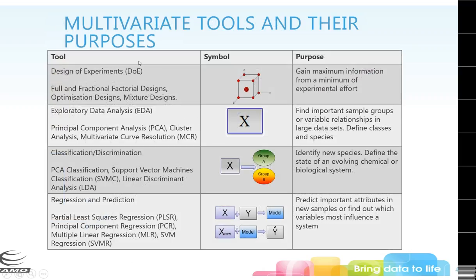There are lots of different multivariate tools you can use. Design of experiments is useful early on when you're trying to get your optimum process going. Exploratory data analysis is where people often start — you've generated a ton of data and want to bring it down to manageable visualizations you can explain to others. Classification and discrimination let you determine whether something falls within or outside a group. Regression and prediction predicts important attributes for new samples, and can also be used for multivariate process control.